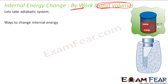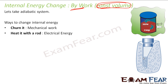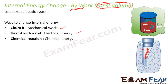There are various ways to change the internal energy of the system by doing work. The first is you churn it — using some mechanical device in a closed system you churn it, doing mechanical work, and that mechanical work will be converted into internal energy. Or you heat it with a rod — you put some internal rod here and heat it with electrical energy. In the first case you are churning it; in the second case you are putting in heat energy. Or what you can do is put some chemicals here which react and generate heat. So you can change the internal energy of this kind of system at constant volume.